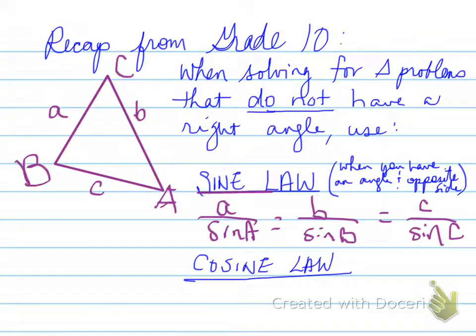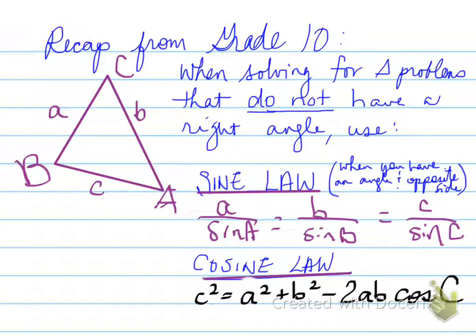The second one, cosine law, is a squared equals b squared plus c squared minus 2bc cosine A. That would be true if we were looking for b squared equals a squared plus c squared minus 2ac cosine B. What if we were looking for little c or angle C? The equation would be c squared equals a squared plus b squared minus 2ab cosine C. So it's very fluid, and you should be able to figure out the angles. And these are only for oblique triangles, that means non-right triangles.